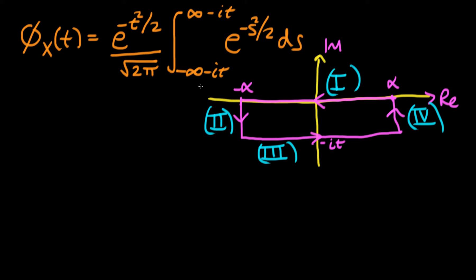The way in which we're going to do that is to evaluate this via a complex contour integral — specifically a rectangular complex contour integral. First, before we consider infinity, we're going to consider a finite number to begin with, and then let that finite number go to infinity. We start by defining our integral in terms of the amount α, which we'll then let go to infinity.